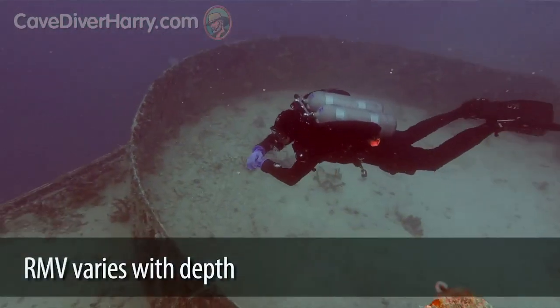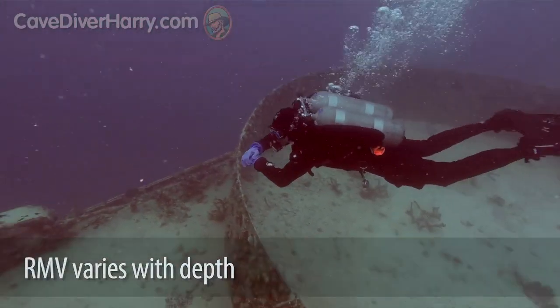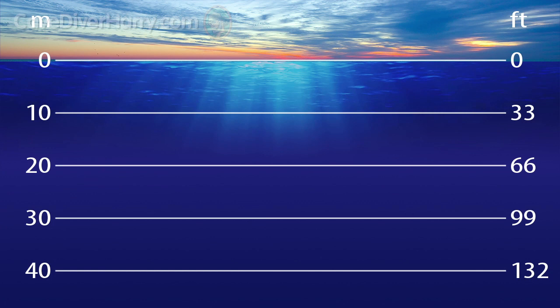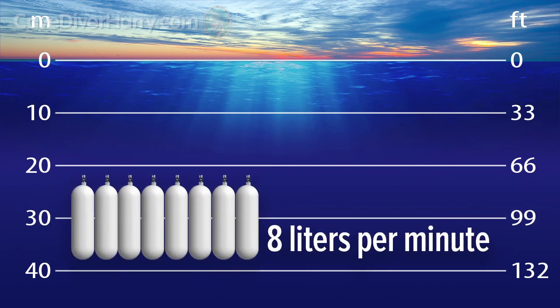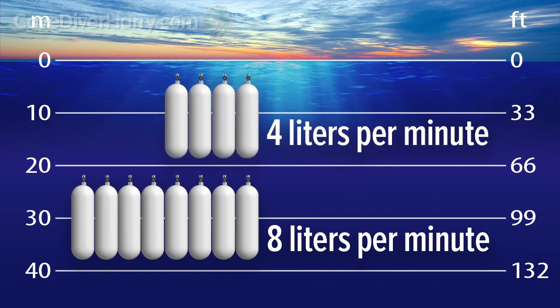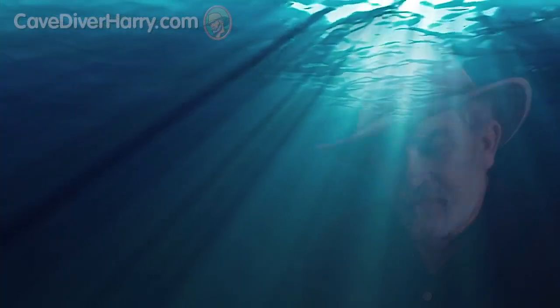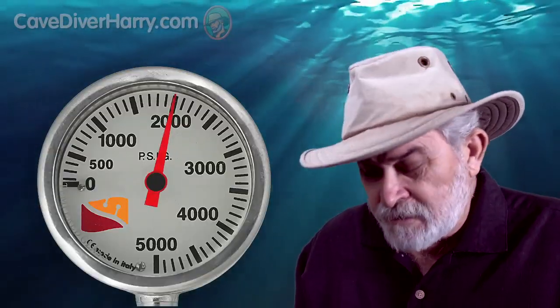The thing about RMV is that it varies with depth. For example, at a depth of 4 atmospheres — that's 30 meters or just under 100 feet — our RMV will be twice what it would be at a depth of 2 atmospheres, or 10 meters / 33 feet. That's just Boyle's law in action. In order to make RMV usable, we need to convert it into something else, and that's where surface air consumption, or SAC rate, comes into play.